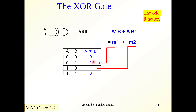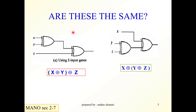The output is equal to 1 if one of the two inputs is equal to 1. It is called the odd function because the output is 1 when an odd number of inputs are 1.